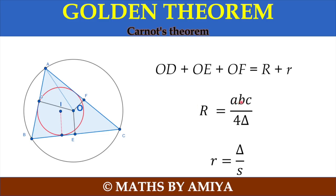And the value of circum radius is ABC upon 4Δ, Δ is the area and the in radius, small r, is equal to Δ upon s, area upon semi-perimeter. So we are going to use this theorem if we have acute angle triangle.